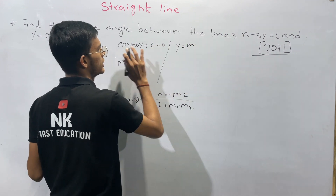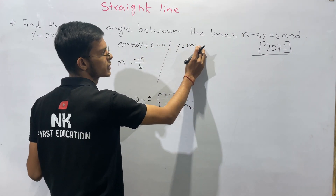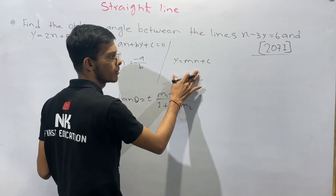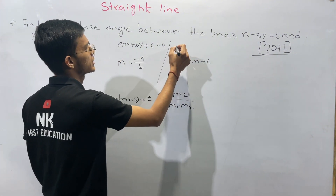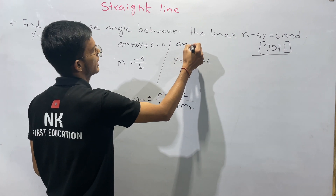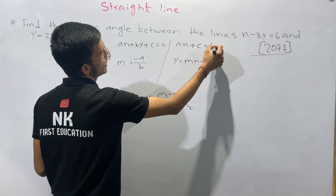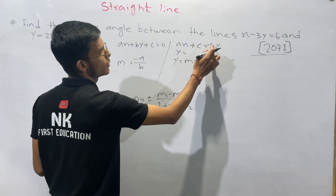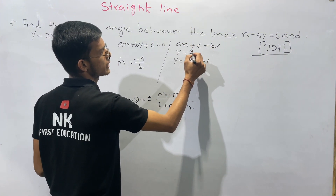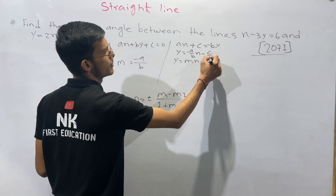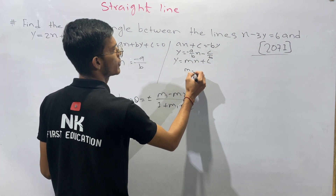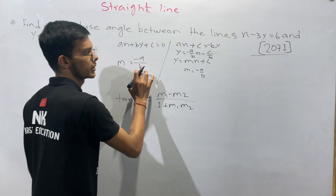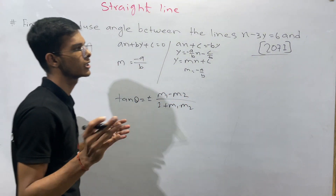We write the equation in the form y equals mx plus c. From ax plus by plus c equals 0, we get slope m equals minus a divided by b. You can use this slope formula directly in your study.